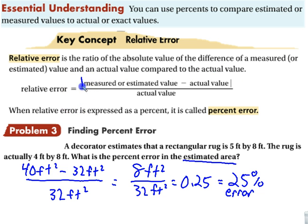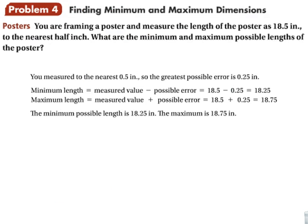Now, notice that we're not talking about negatives because we have these absolute value symbols. So the measured or estimated minus the actual over the actual. Minimum and maximum dimensions. So this is using that same concept. But you're framing a poster and measure the length of the poster as 18.5 inches to the nearest half inch. Most likely, you're not going to go too big or too small. I really recommend when you get into class that you look at the box on page 147 that says think. And that maybe will make this part a little bit more making sense. Maybe you can even look at the internet on the textbook online. What are the minimum and maximum possible lengths?